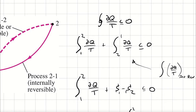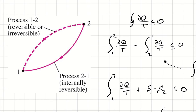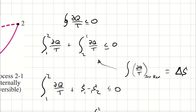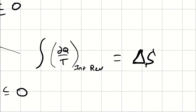So if I had four processes in that cycle, it would be the integral from one to two plus the integral from two to three plus the integral from three to four plus the integral from four back to one. Here, because I only have two processes, it's just the integral from one to two of δQ/T plus the integral from two to one of δQ/T. That quantity — that cyclic integral — must be less than or equal to zero. For two back to one, that process is internally reversible, which is how we defined our delta S term.